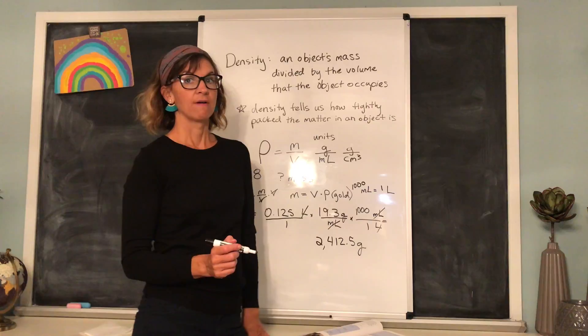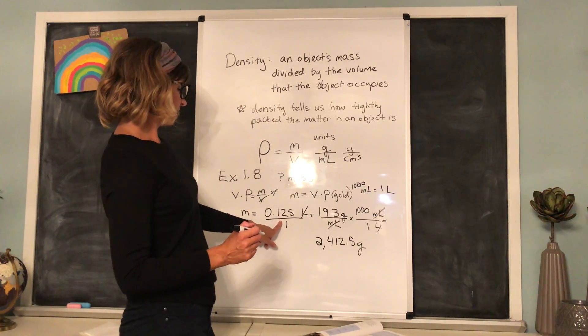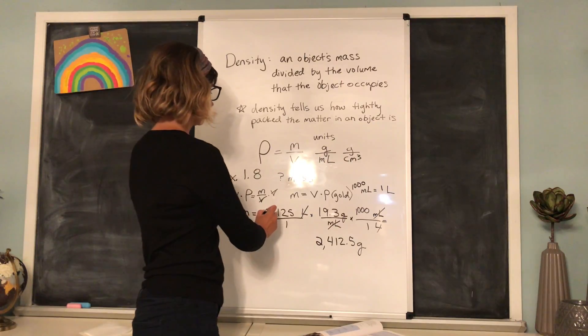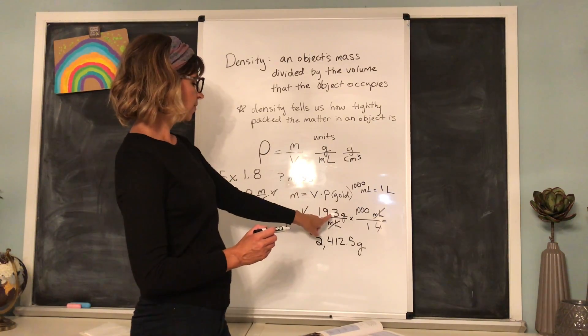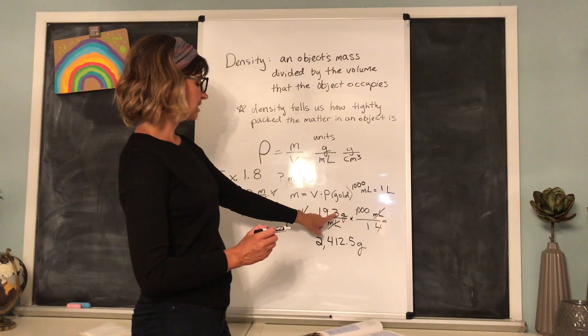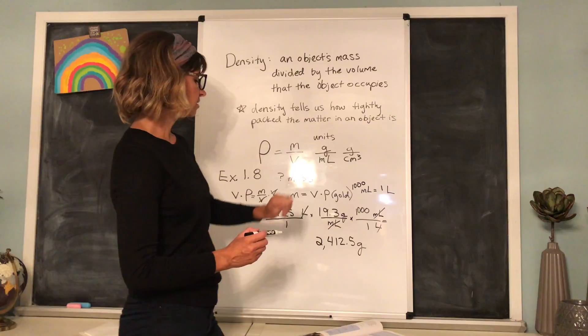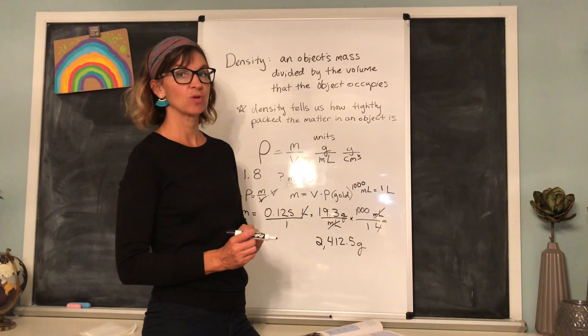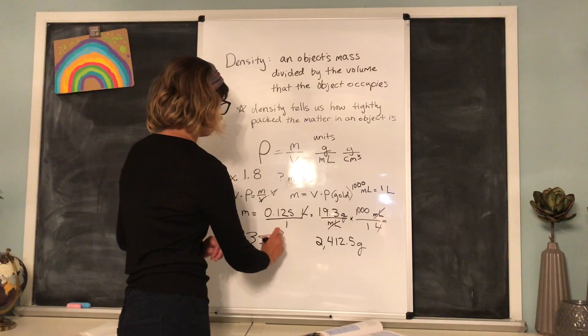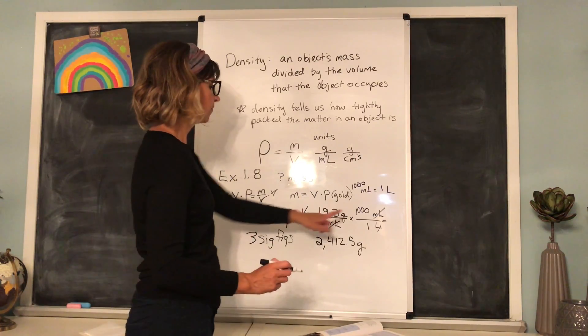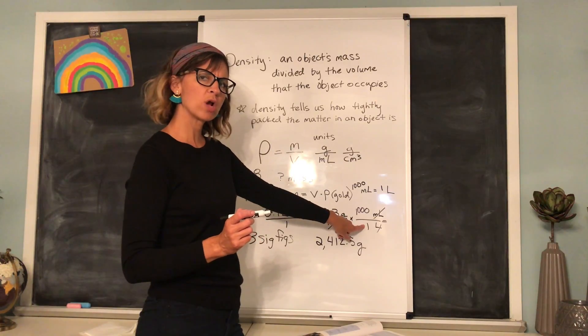And now for significant figures. How many significant figures were in this number? 0.125. The 1, the 2, and the 5. 3. How many were in the gold density? 3. 1, 9, and 3. 3. So that means our answer has to end up with 3 sig figs.